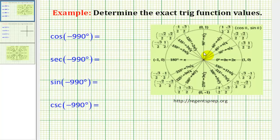So what we need to do is determine where negative 990 degrees will intersect the unit circle, and then we can use that point to determine these four trig function values.